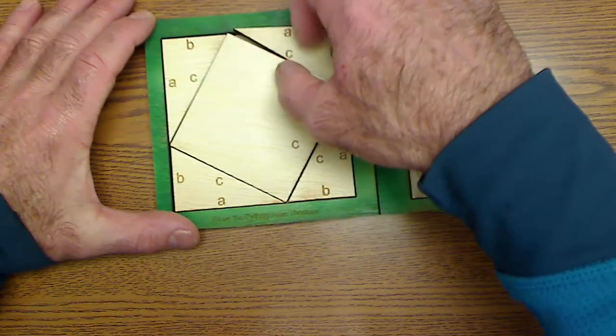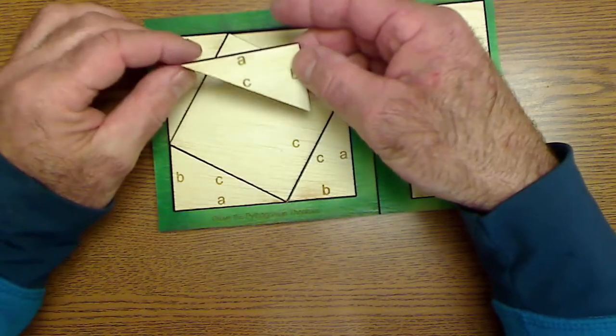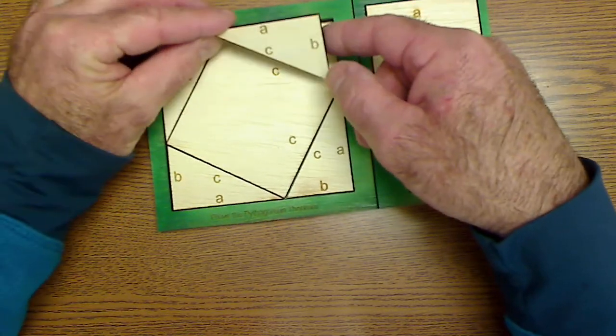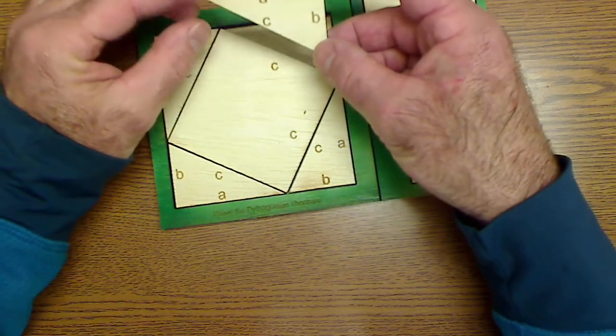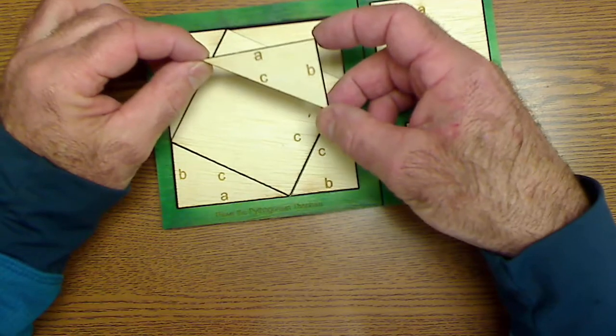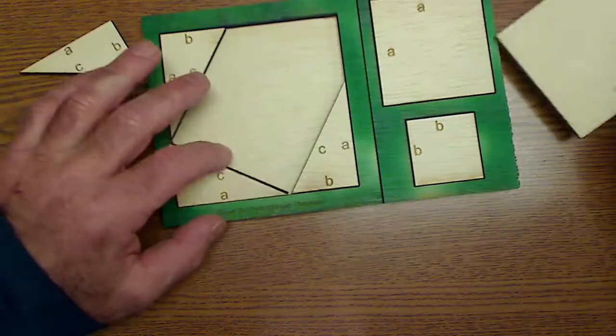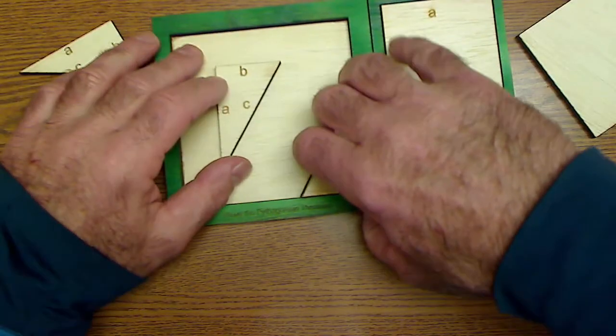Here I have a square and four right triangles. The square is length C. Each triangle is A, B. I'm going to take these pieces out and rearrange them in here.